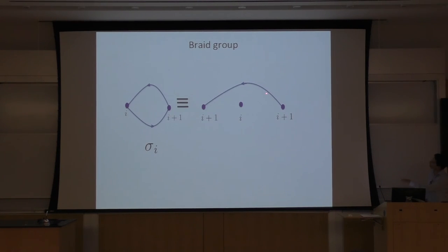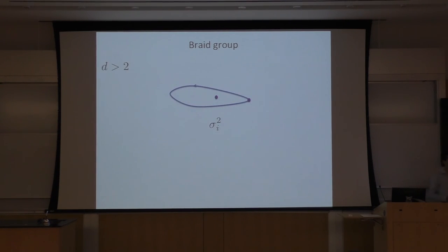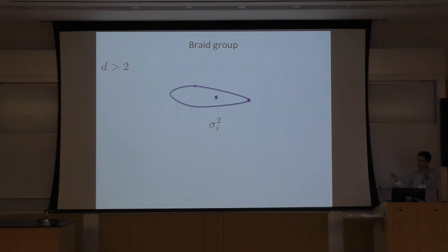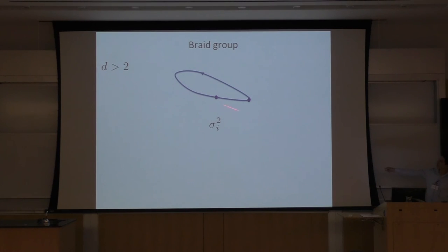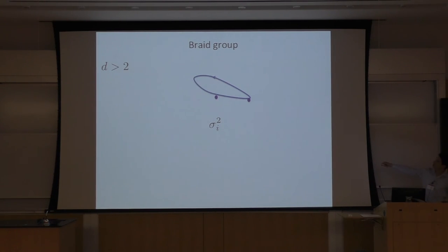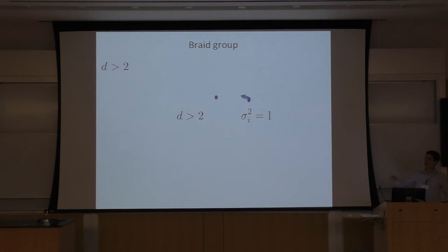So in d greater than two, the braid group is the same as the permutation group. But in d equals two, the braid group is different from the permutation group — it can have non-abelian representations, and it can have matrix representations even with non-integer effective dimensions, such as a square-root-of-two dimensional representation. Abelian representations are abelian anyons, meaning sigma is just some phase — not necessarily plus one or minus one, it can be any phase. That's why I call it an anyon — 'any' phase. And matrix representations give non-abelian anyons.